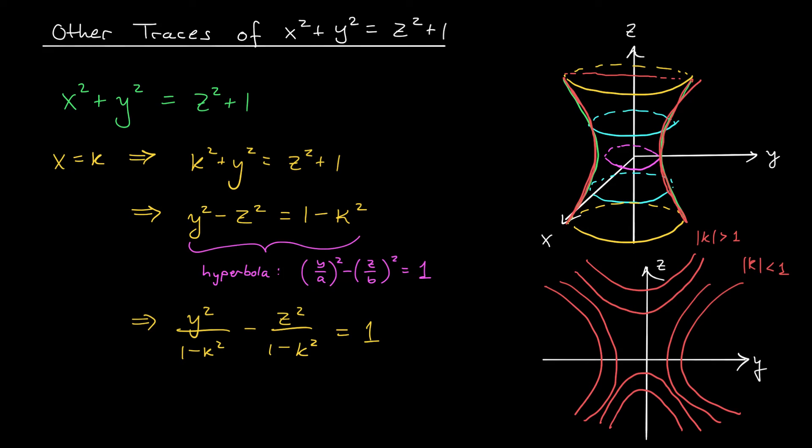If, however, I slice it at a larger x value, like over here, now we're going to cut two different pieces. We're going to cut a piece up here, and we're going to cut a piece down here. Sure enough, we get a hyperbola opening in the z-axis. Pretty cool, huh?